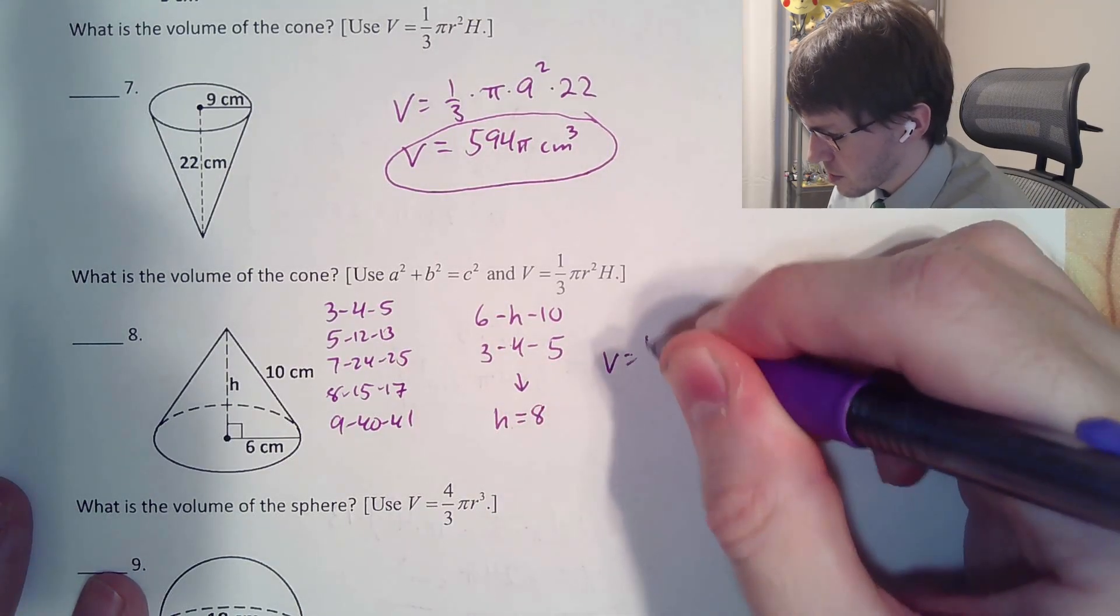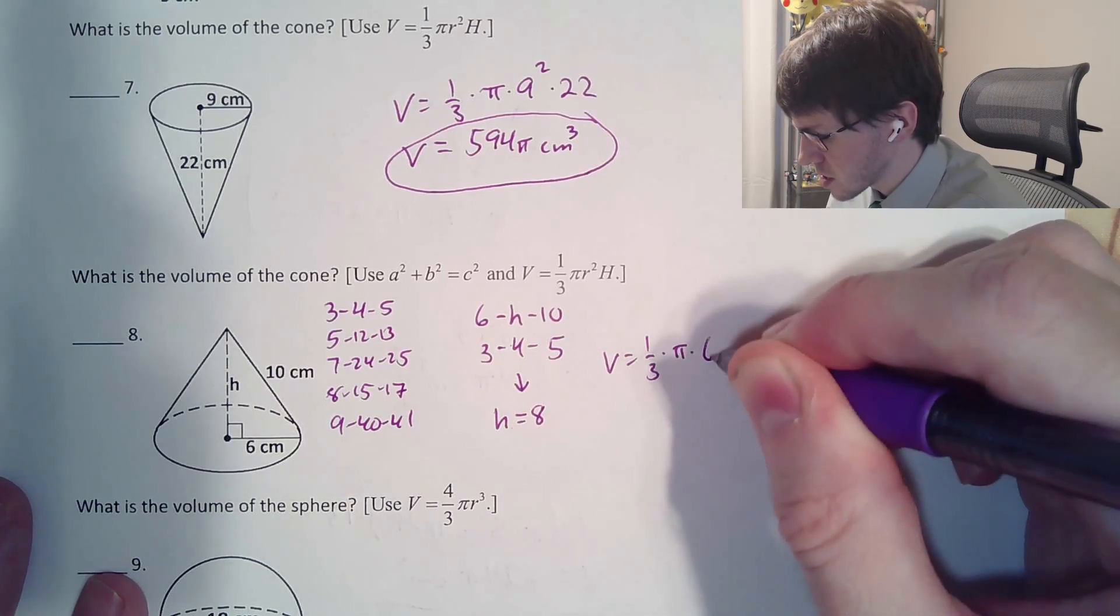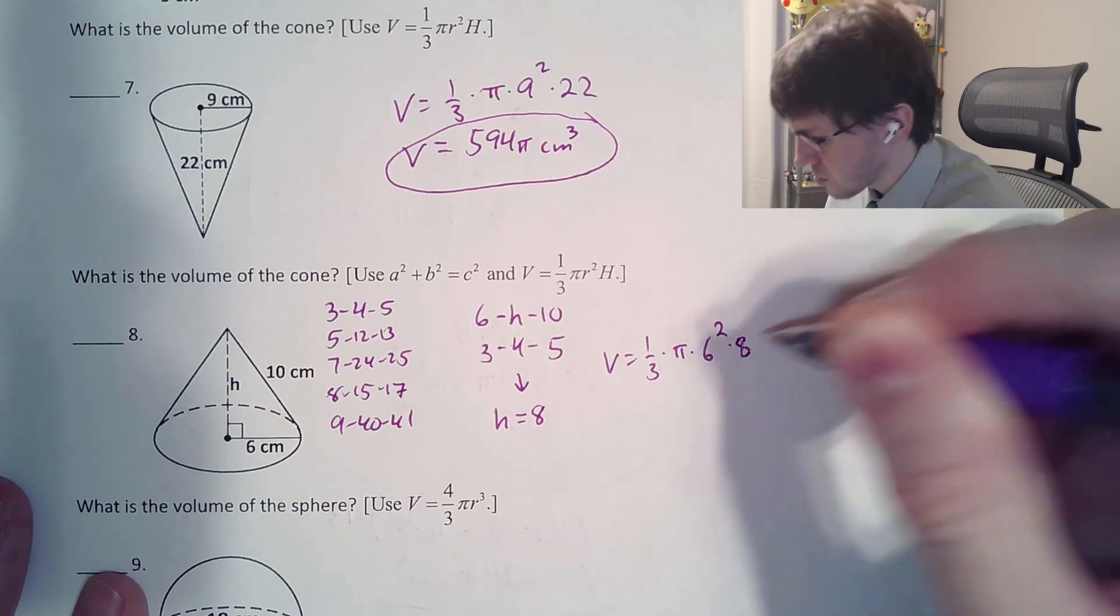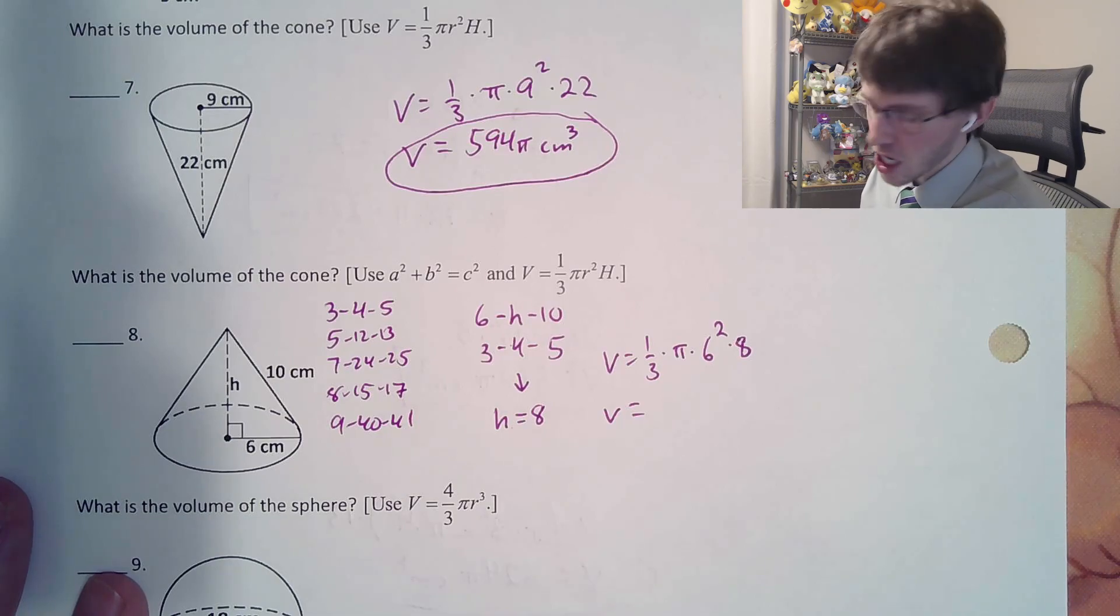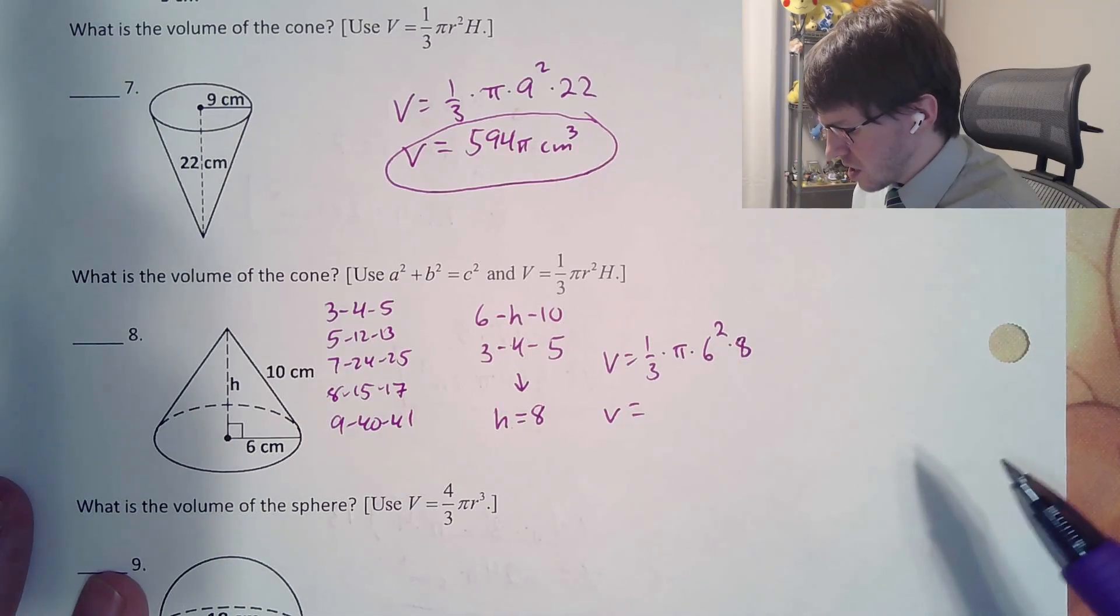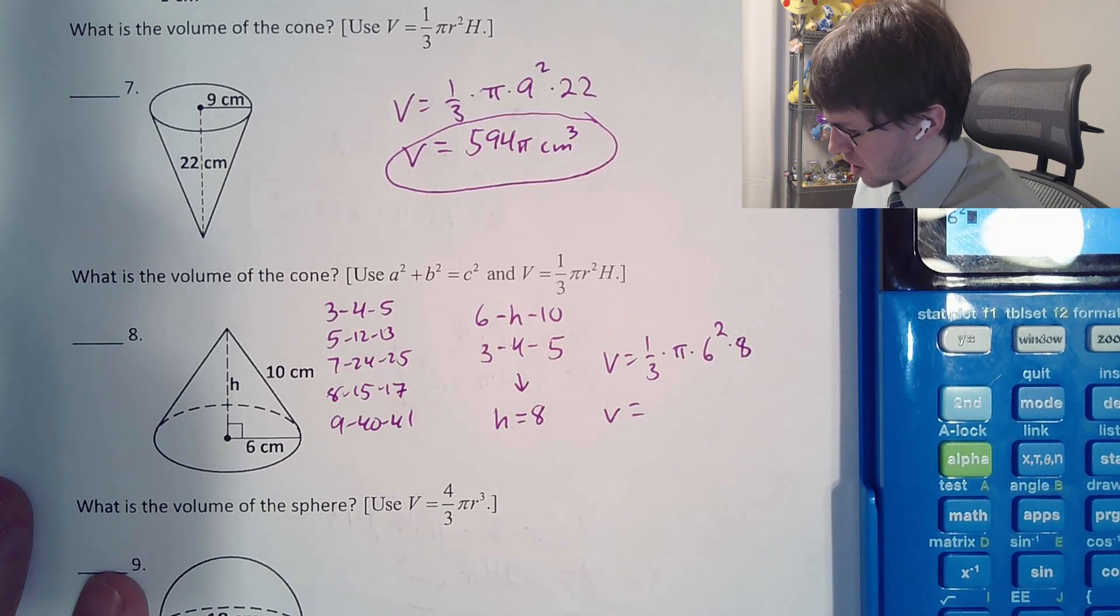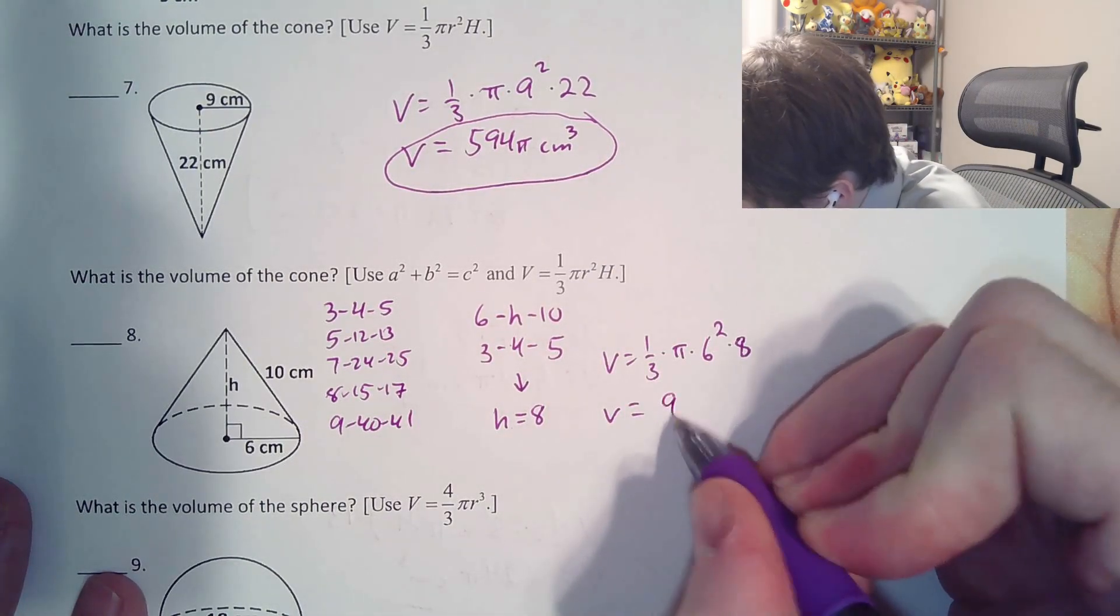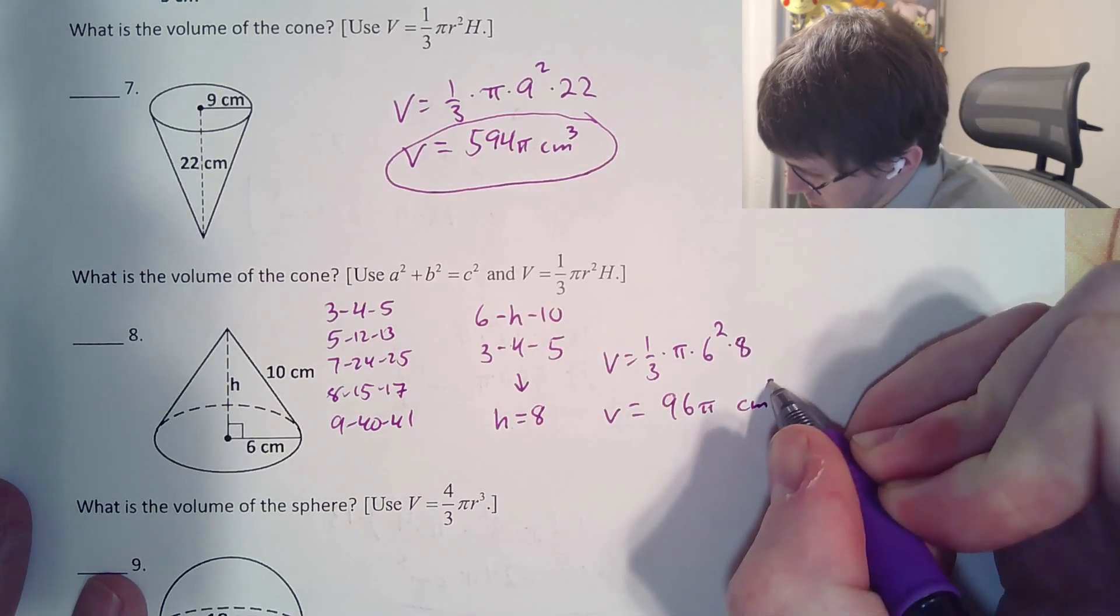Finally, our volume is going to be nice and easy. 1/3 times π times that radius 6 squared times that height of 8 that we just found. Throw all that into your calculator. What are you going to get? Well, I think you get 96, but I'm just going to, you know, you do get 96. All right. So you get 96 with a π on it and centimeters cubed.